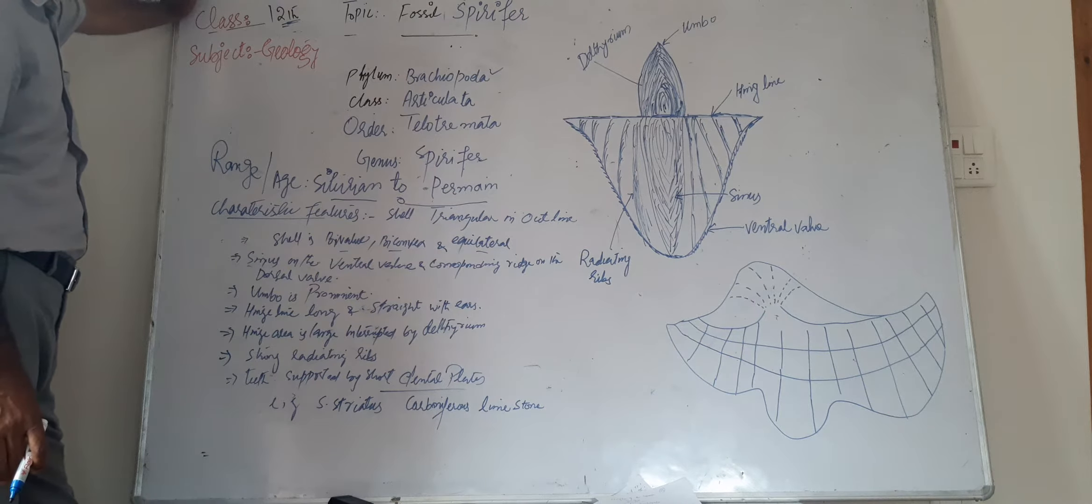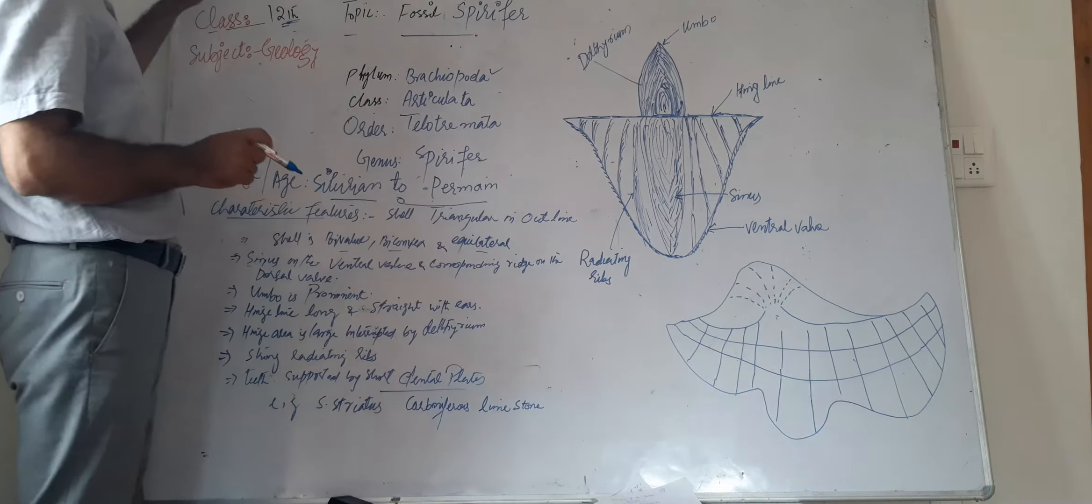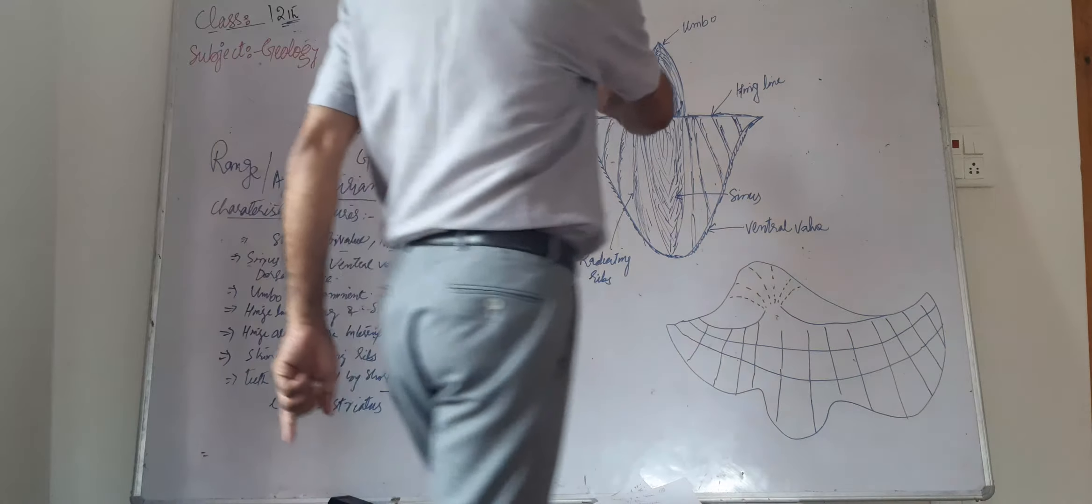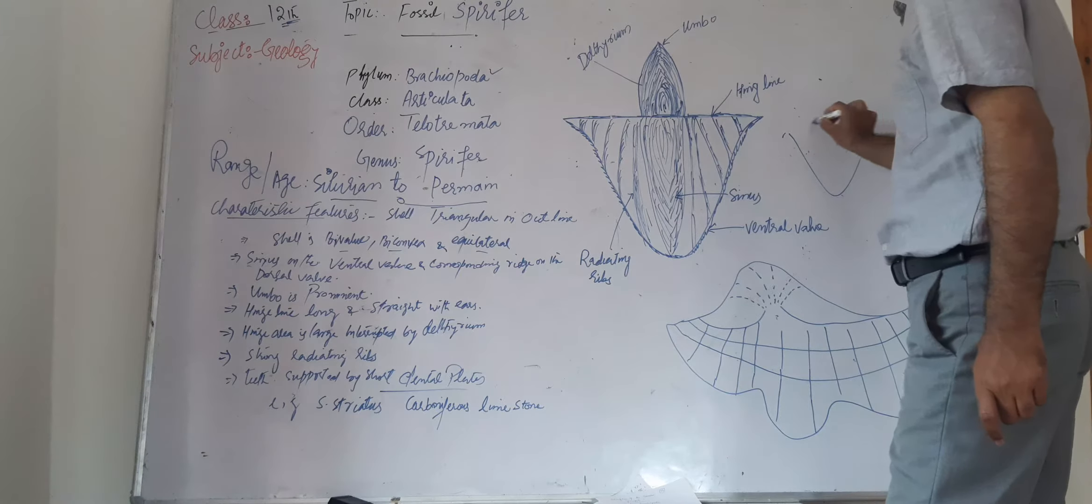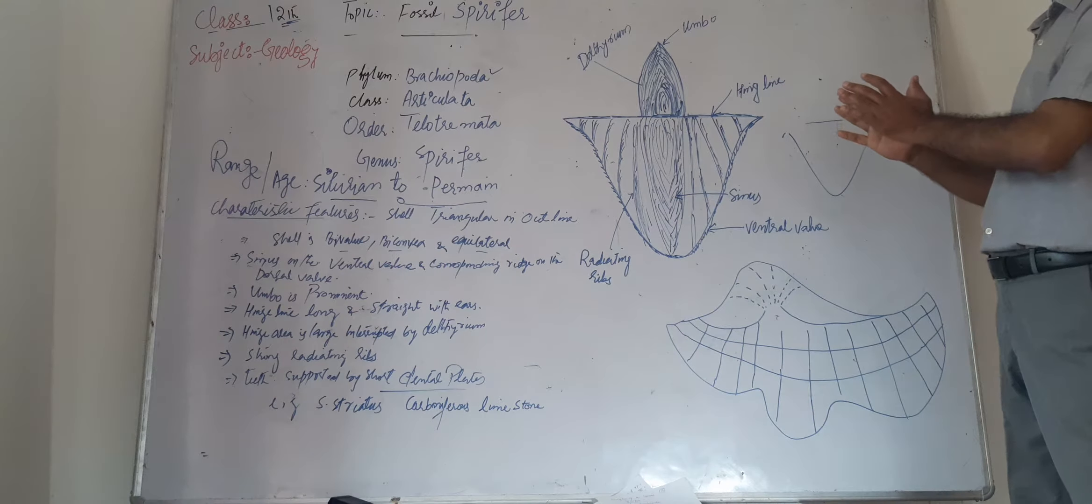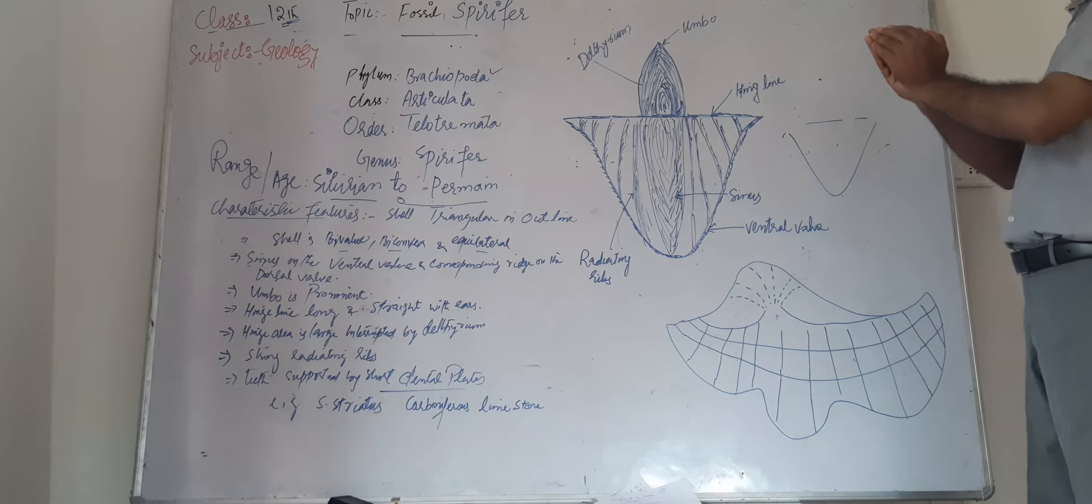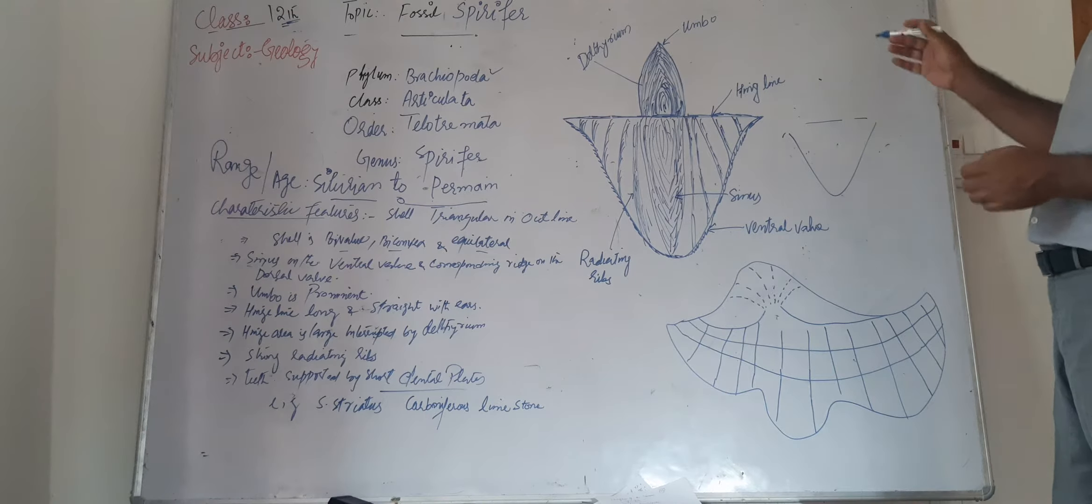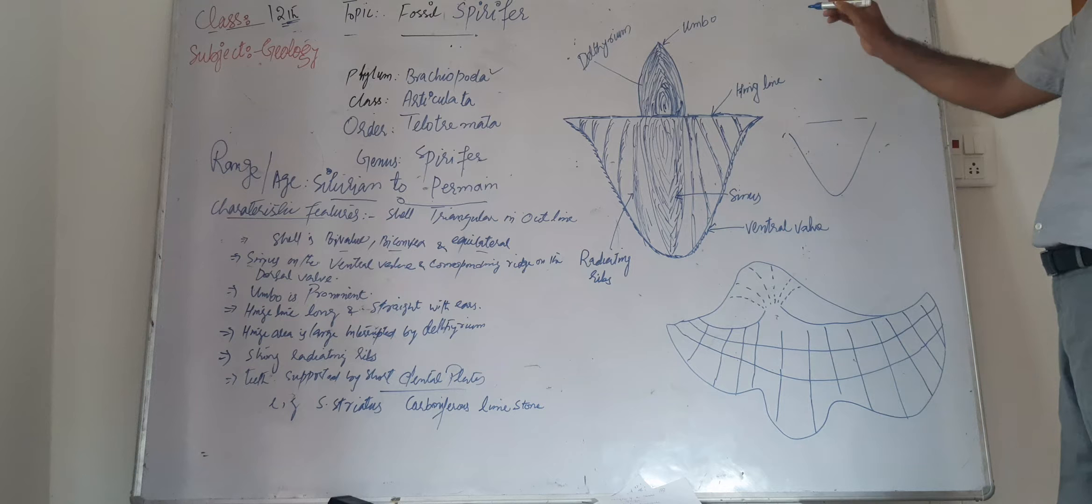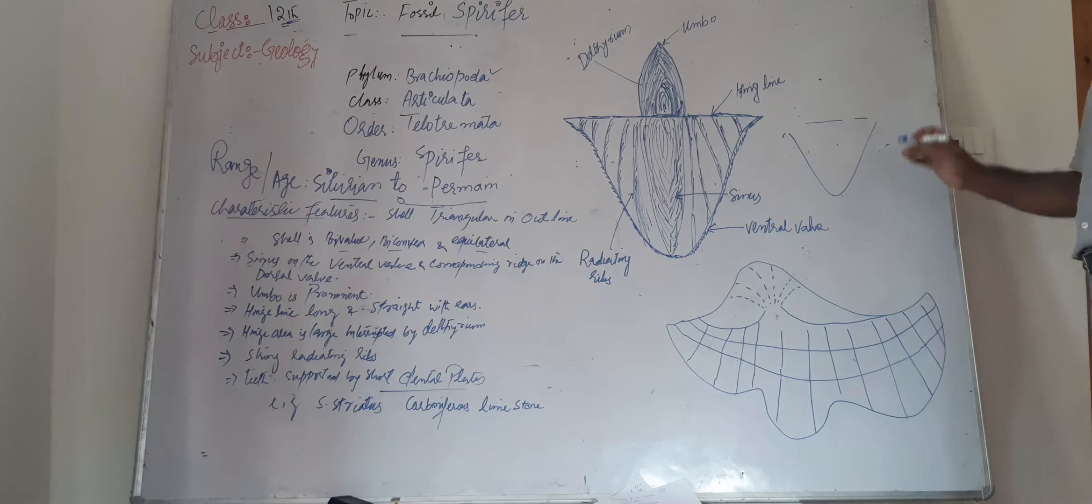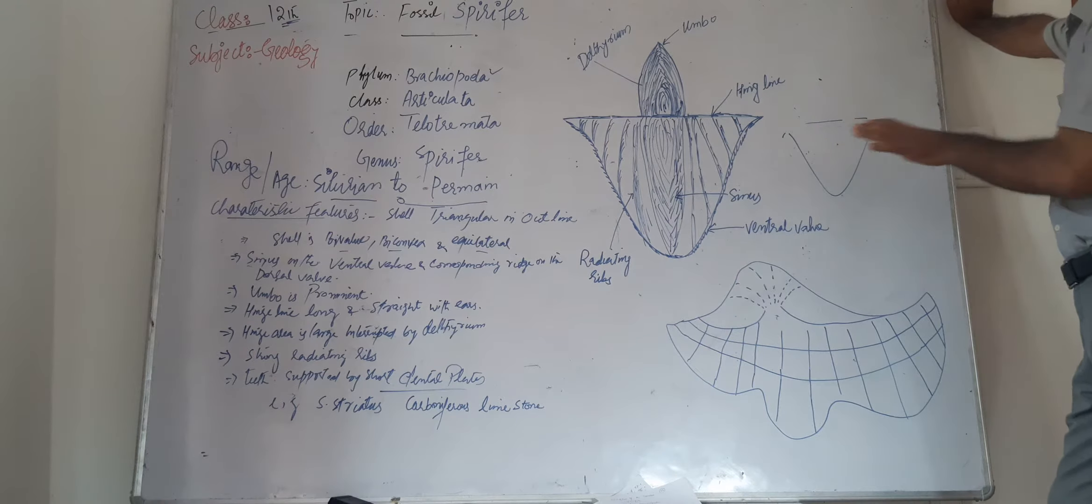The Spirifer shell is in triangular outline form. As you see, the shell is in triangular shape just like this, and this shell is biconvex - both the valves of the shell are convex. It is an equilateral shell. When we see the symmetrical axis, in that case the shell is to be identified as an equilateral shell.